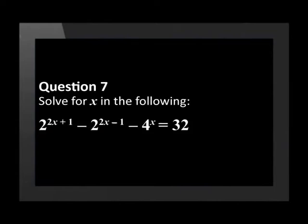Question 7. Solve for x in the following: 2 to the power of 2x plus 1, minus 2 to the power of 2x minus 1, minus 4 to the power of x, is equal to 32.